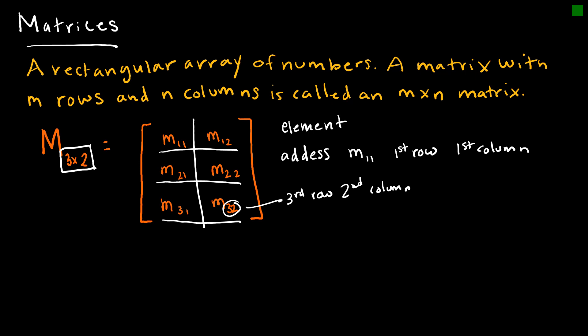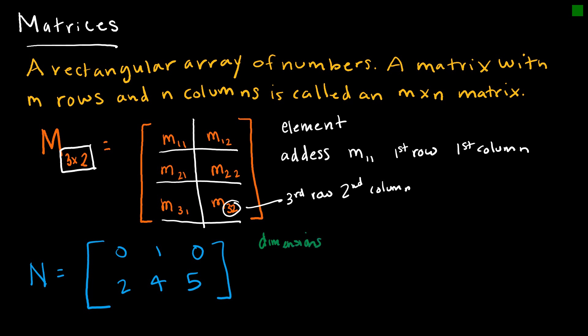Let's say I had a matrix — 0, 1, 0, 2, 4, 5 — and we're calling this matrix N. We might be asked to determine the dimensions. The dimensions here would be a 2 by 3, because I have two rows and three separate columns.